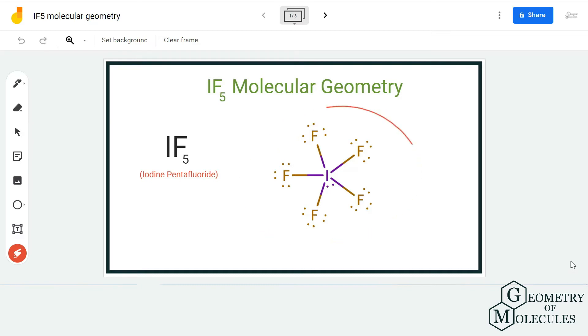going to look at its Lewis structure. This is the Lewis structure of IF5 molecule in which iodine atom is forming bonds with five fluorine atoms, and apart from that there is also a lone pair of electrons present on the central atom.